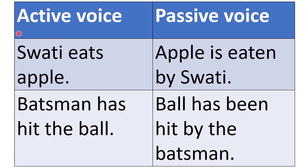Let's see examples. 'Swati eats apple' is active voice because Swati is performing the action. When changing to passive voice, Swati (subject) becomes the object, and 'apple' (object) becomes the subject. 'Eat' is simple present tense, so in passive voice we use is/am/are + third form. Apple is singular, so we use 'is.' Third form of 'eat' is 'eaten.' Result: 'Apple is eaten by Swati.'